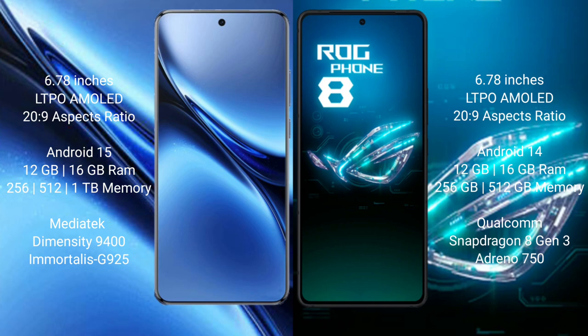The Vivo X200 Pro runs on the Android 15 operating system. The Asus ROG Phone 8 runs on Android 14. The Vivo X200 Pro comes with 12GB or 16GB RAM and 256GB, 512GB, or 1TB internal storage, with a MediaTek Dimensity 9400 processor.